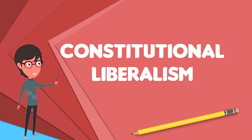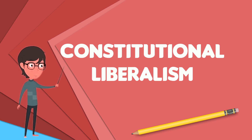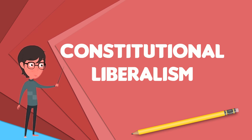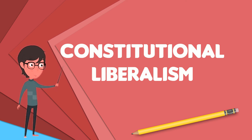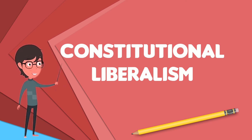Democracy is becoming more common around the world. Freedom House reported that in 2013 there were 118 electoral democracies. Many of these countries are not constitutionally liberal and can be described as illiberal democracies.